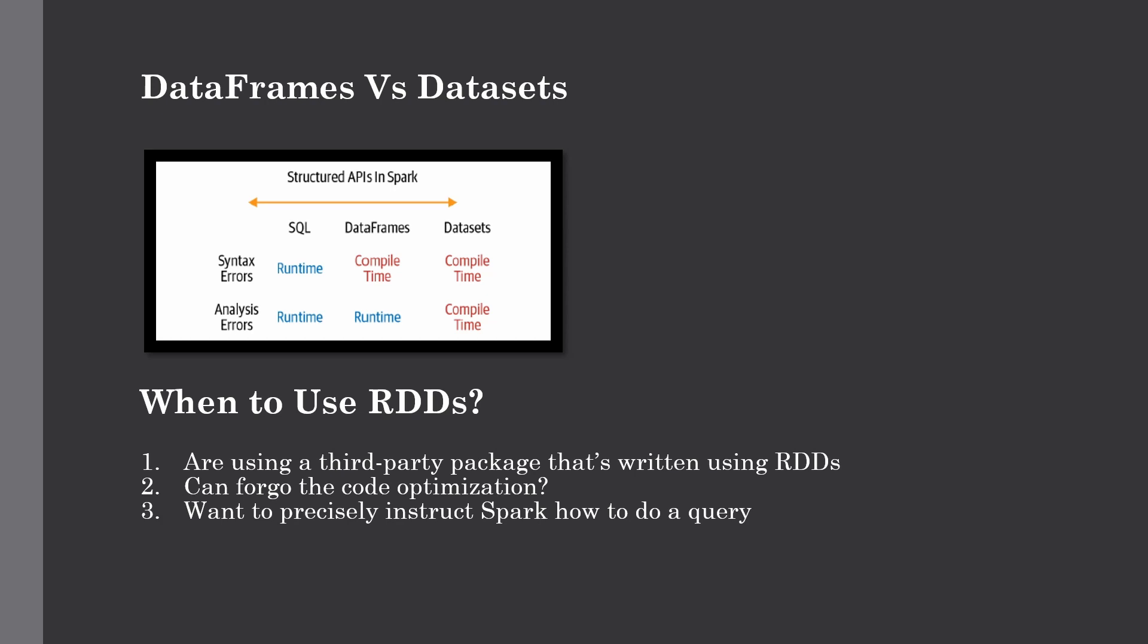These are some scenarios where you want to use either DataFrame or Dataset. And lastly, as you can see in this figure, if you want error code during compilation rather than at runtime, you have to choose the appropriate API as given in this figure. There are two types of errors—syntax errors and analysis errors—and how they're comparing DataFrames and Datasets is how you should choose between them.